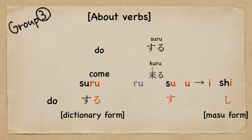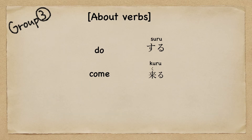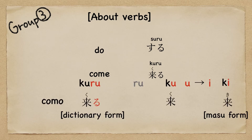Shimasu. And kuru is the same. Kuru — throw away 'ru', then 'u' changes to 'i'. Ki, masu — kimasu.